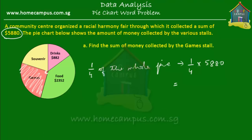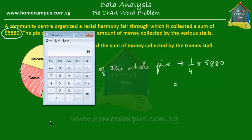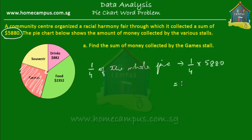I'm going to use a calculator — if you're not allowed to use one in school, you must do the calculation on pen and paper. So $5,880 divided by 4 is equal to $1,470. A quarter of $5,880 is $1,470, so the game stall collected $1,470. That's the answer to the first question.